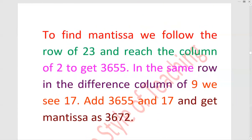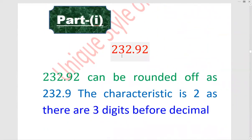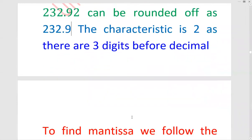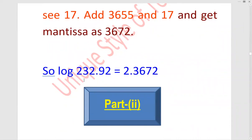اب اس کو آپ نے express کرنا ہے in the form of log۔ 3 ڈیجٹس میں سے 1 minus کیا تو آنسر آجائے گا 2.3672. اس log کا ویلیو یہ ہے: log 232.92 is equal to 2.3672.